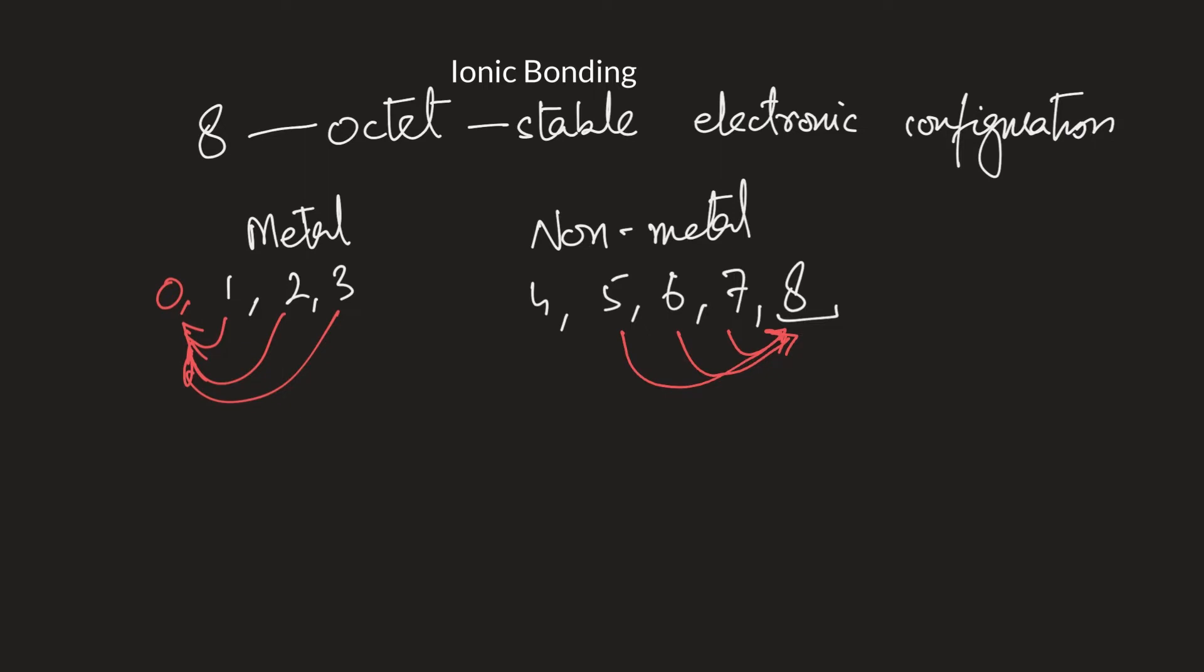So what happens is that metals lose electrons—or we can also say they donate electrons—and non-metals gain electrons, or we say they accept electrons.